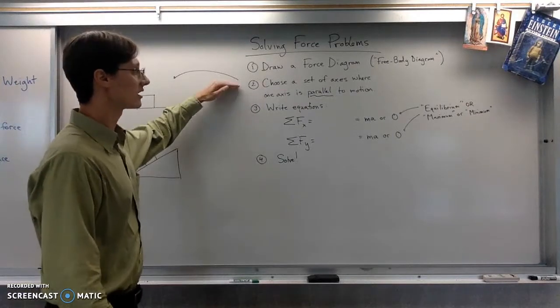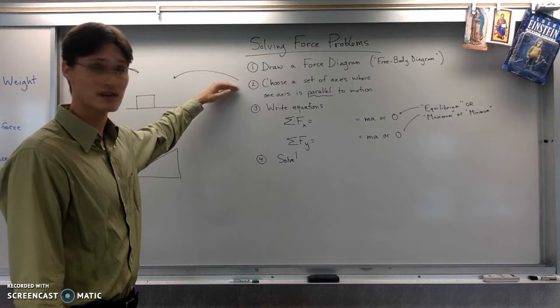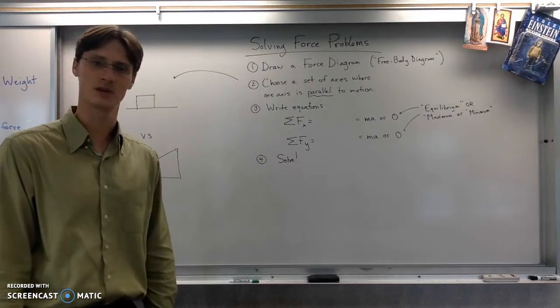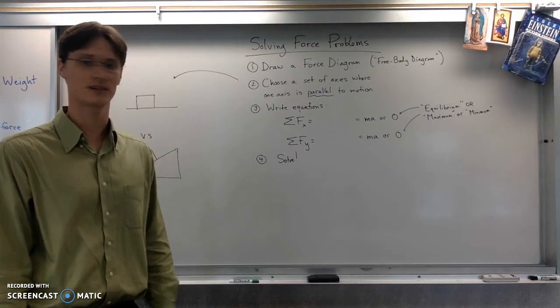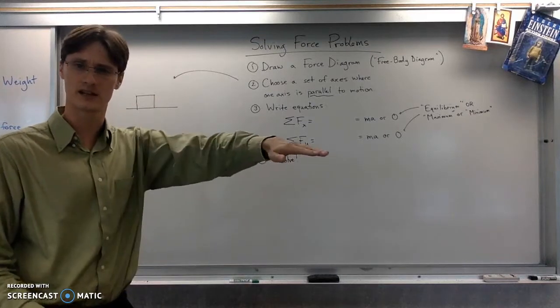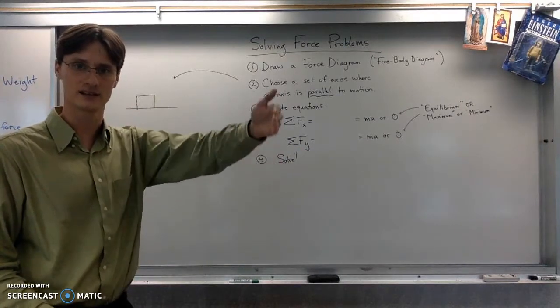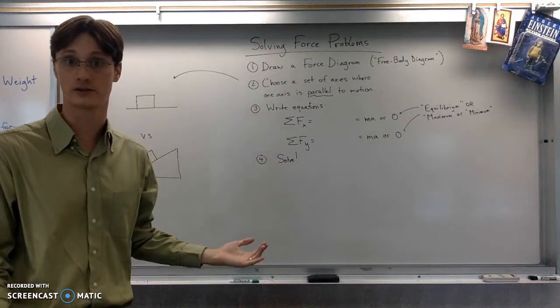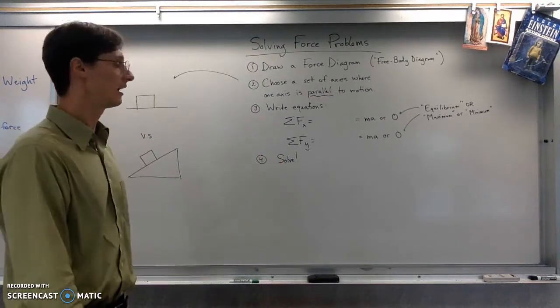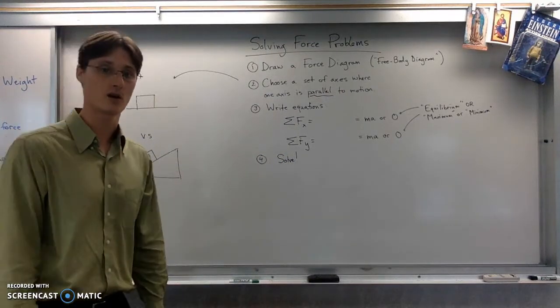Second, you're going to choose a set of axes where one axis is parallel to motion. That right there might sound kind of like, well, why, why wouldn't I just use, like, this is x, and then this is y. Like, horizontal and vertical should be good enough, right? As it turns out, no, not always.